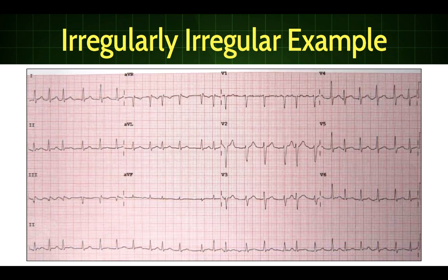Here's a 12-lead example of an irregularly irregular pattern. You can see the rhythm strip along the bottom is lead two, and the R-to-R intervals are definitely not marching out. If you look in all the different leads, we don't see anything that consistently looks like a P-wave. So we would be very safe to call this atrial fibrillation. AFib is the most common and classic example of an irregularly irregular rhythm.